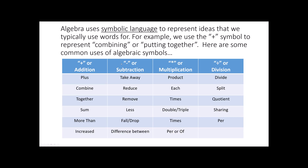We also have subtraction — the idea of taking away, reducing, removing. Sometimes we'll use the word less, falling, or finding the difference between two things. For multiplication, words include: product, each, times, double, triple, and the word per or of — those typically are multiplication words. And then we have the division symbol, which represents splitting or dividing things. Sometimes you'll see the word quotient or sharing. Occasionally the word per also appears as a division word.